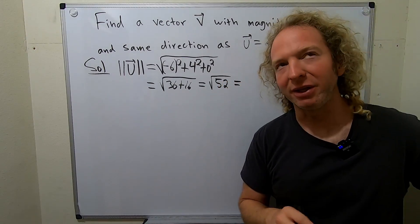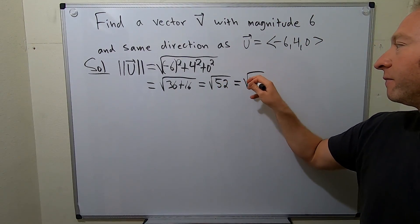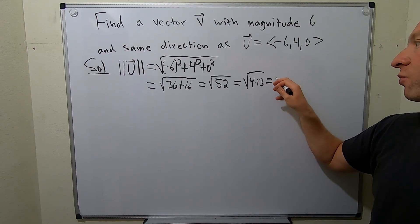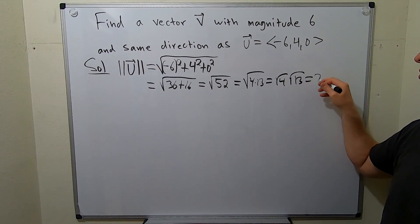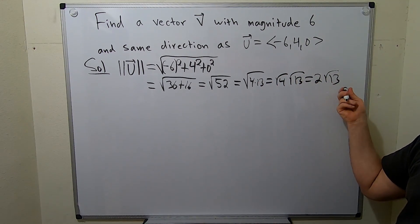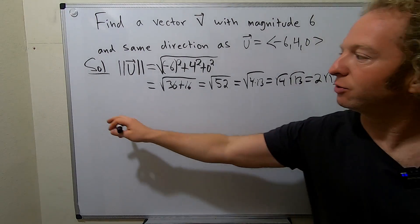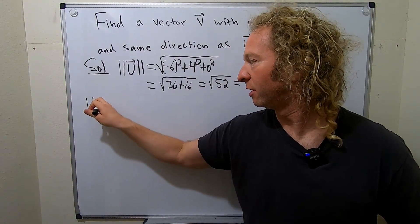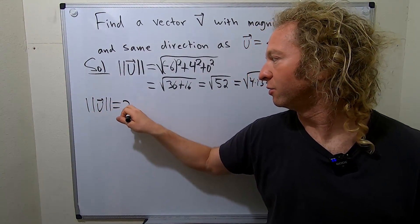I think that's 4 times 13, yeah, it's 4 times 13. So that's square root of 4, square root of 13. It's 2 square root of 13. So the magnitude of U, I'll write it again over here so you can see it, is 2 square root of 13.